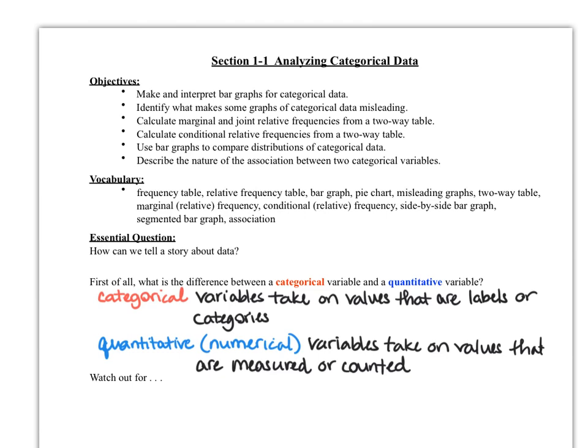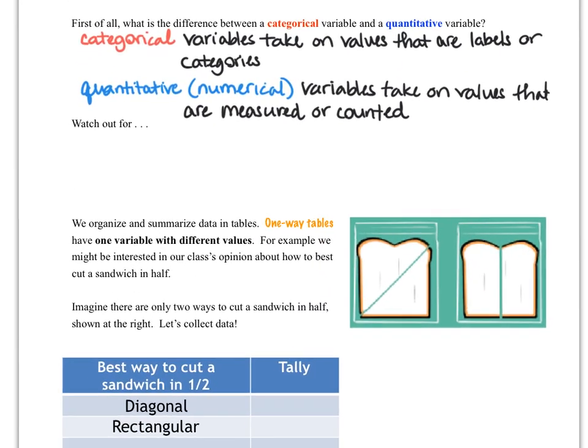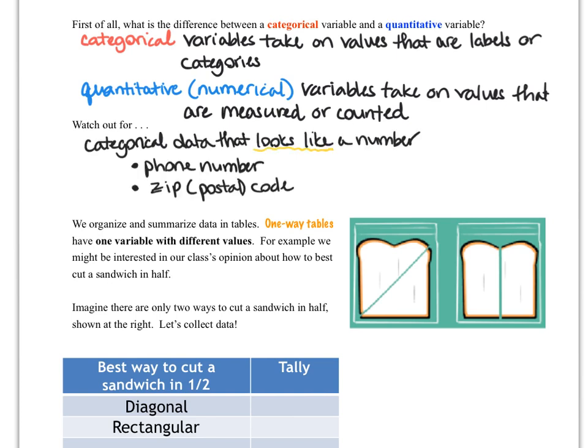So hopefully you remembered the definition about categorical variables and quantitative or numerical variables and the type of values that they can take on. Just a caution, we're always going to be watching out for that kind of disguised categorical variable that looks like a quantitative variable. And here are some specific types of categorical variables that we need to be on the lookout for because they are disguised as numbers, but they're not actually numerical variables or numerical data.